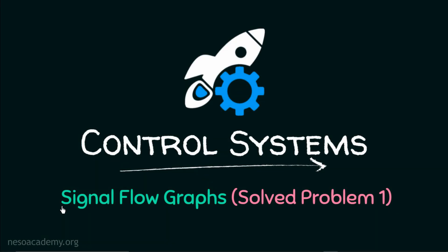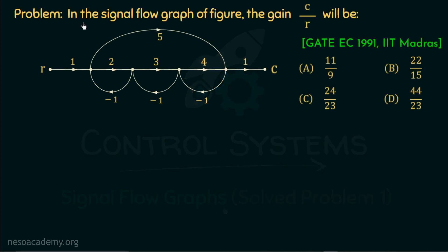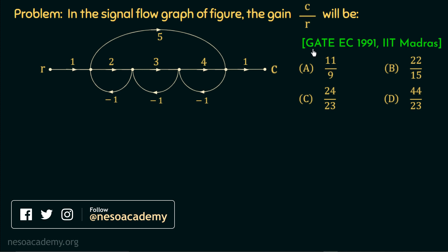Hello everyone and welcome back to the next lecture of control systems. In this presentation, we are going to discuss problem 1 on signal flow graphs. One signal flow graph is given to us and we need to find out the gain C over R. This is a multiple choice question and was asked in GATE EC 1991, given by IIT Madras.